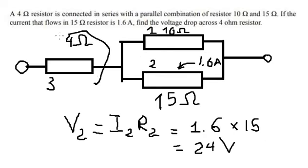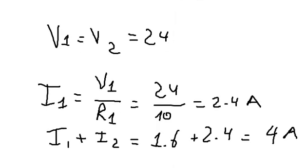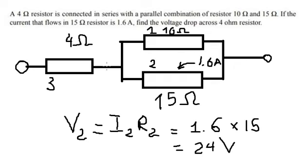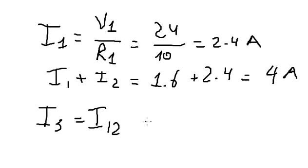We know that this one is in series with this one, so we can get I3 that is equal to I12 because this is series. So we got 4 amperes.